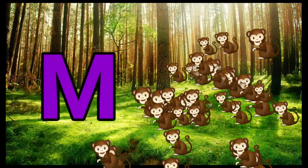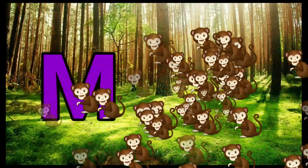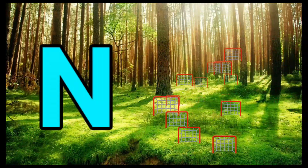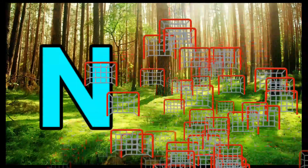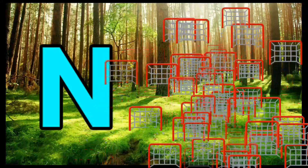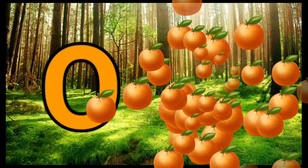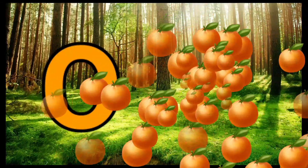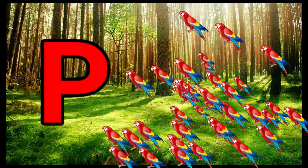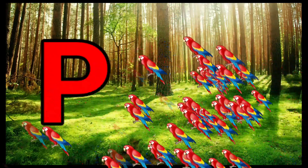M is for [word unclear]. N is for Net, N-N-Net. O is for Orange, O-O-Orange. P is for Pet, P-P-Pet.